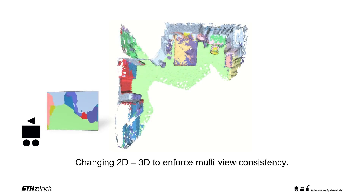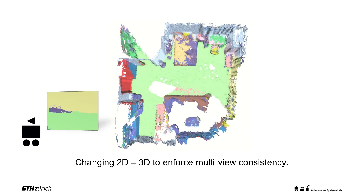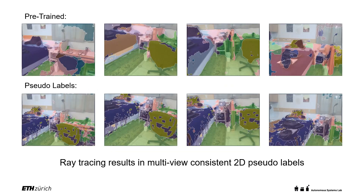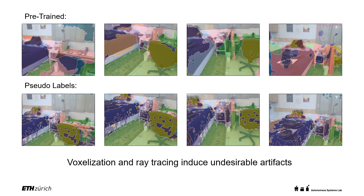Individual predictions are fused into the map in a probabilistic manner. After ray-tracing, the generated pseudolabels in the bottom row apply a multi-view consistency constraint, but include artifacts induced by voxelization.